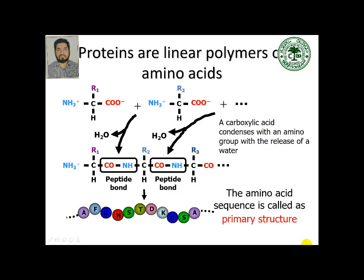We know that proteins are linear polymers of amino acids. If you look into the structure of the amino acid, the word amino acid itself is made up of two components: one is known as the amino group and another is the acetic group. This is the side chain which will be variable for the 20 amino acids which are coded by the genetic codon. Although there are more than 120 amino acids, only 20 are coded by the genetic codon, and they differ only in the side chain — say for instance R1 group and R2 group.